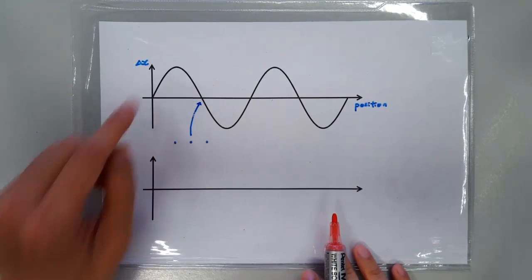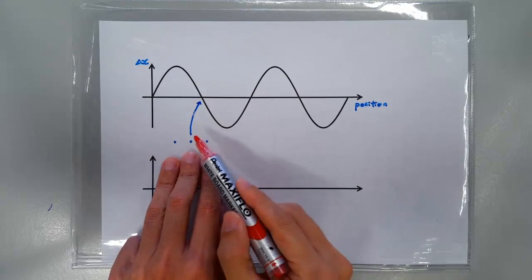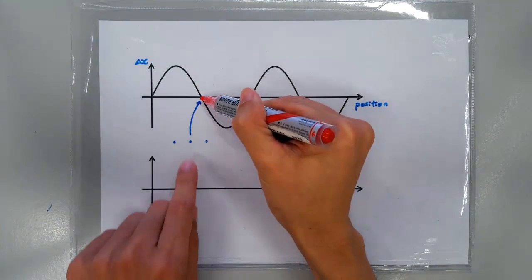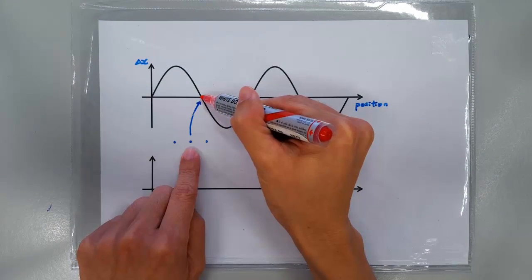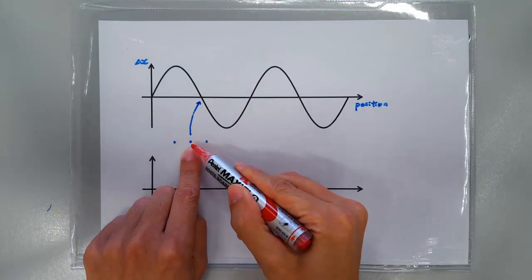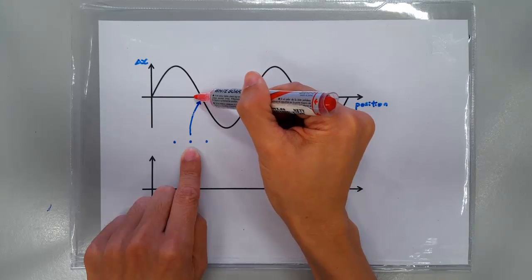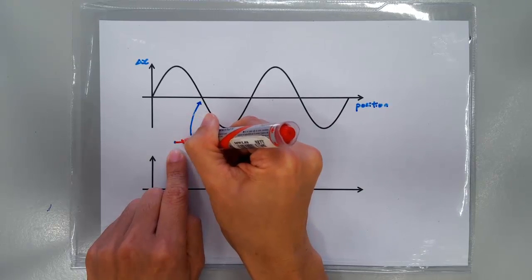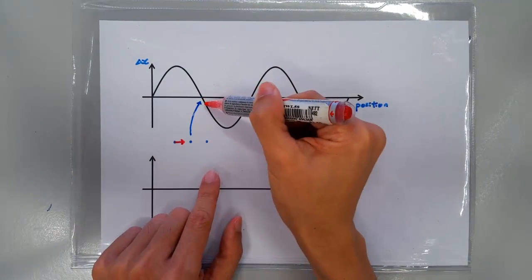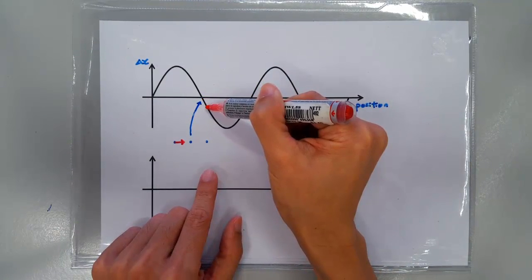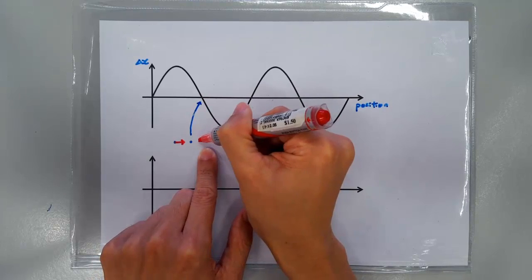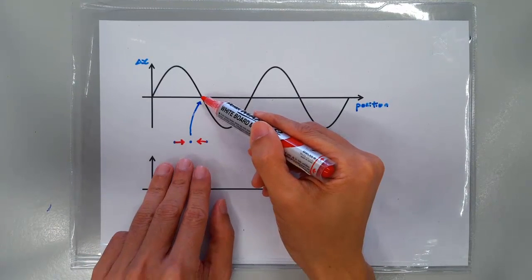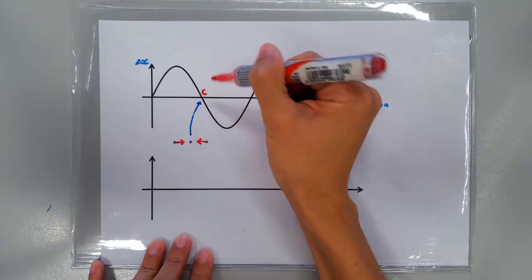Consider this position here. What I have sketched here are the positions of three air molecules at their equilibrium position. This guy has got a displacement of zero, which means he stays put. His neighbor on the left has got a positive displacement, which means he is displaced to the right. His neighbor on the right, however, has a negative displacement, which means this guy is displaced to his left. This makes this position here more squeezy than usual, which means this position is a region of compression.